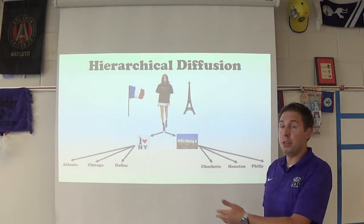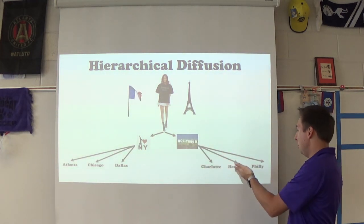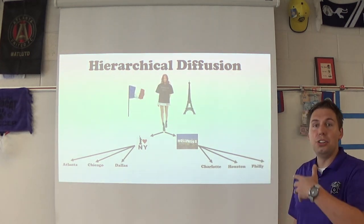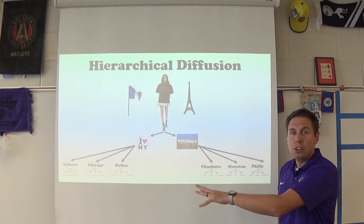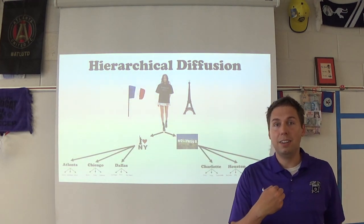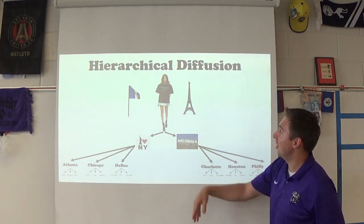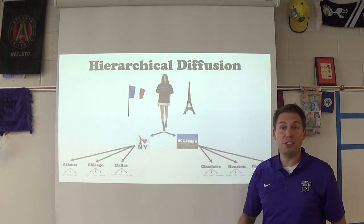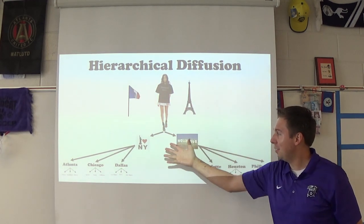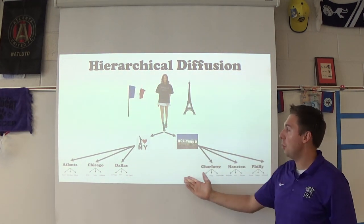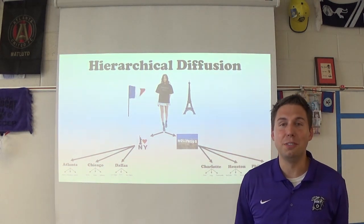From New York and LA, it'll go to other tertiary cities: Atlanta, Chicago, Dallas, Charlotte, Houston, and Philly. Then it goes to quaternary cities — even smaller ones — and it goes lower and lower until it gets to people like me at the bottom of the hierarchy. So with fashion, the hearth is at the top with fashionable cities like Paris, France, and it works its way down to very small cities and eventually to people like Mr. White. That's hierarchical diffusion.